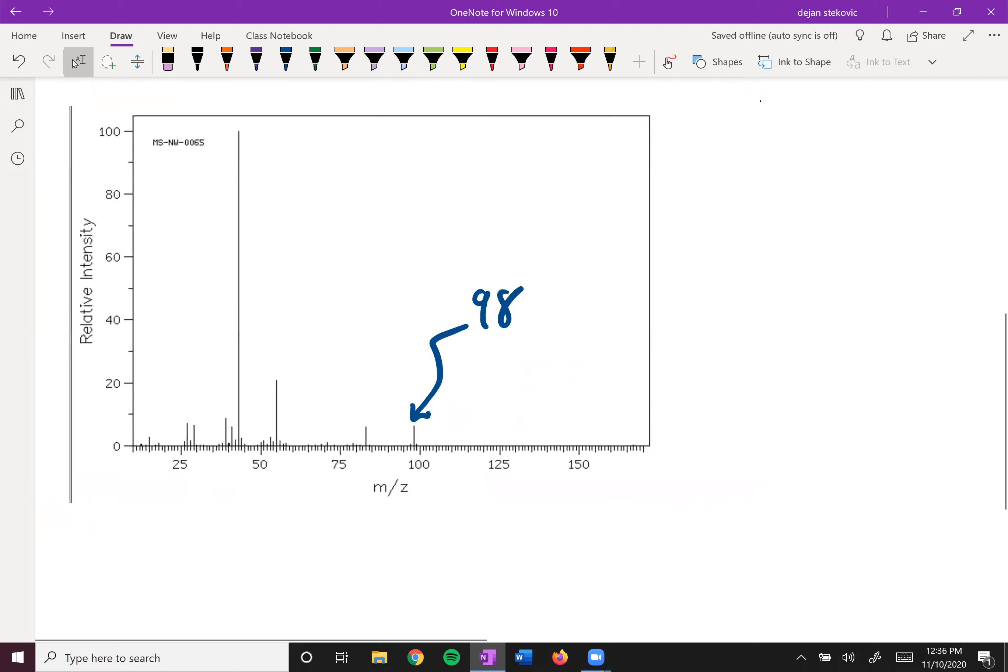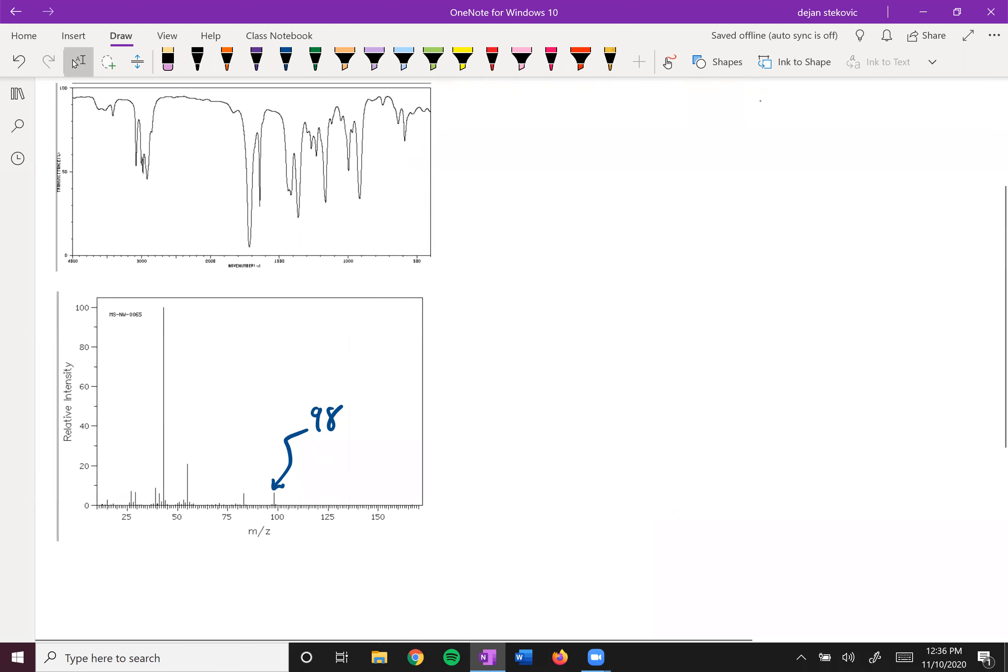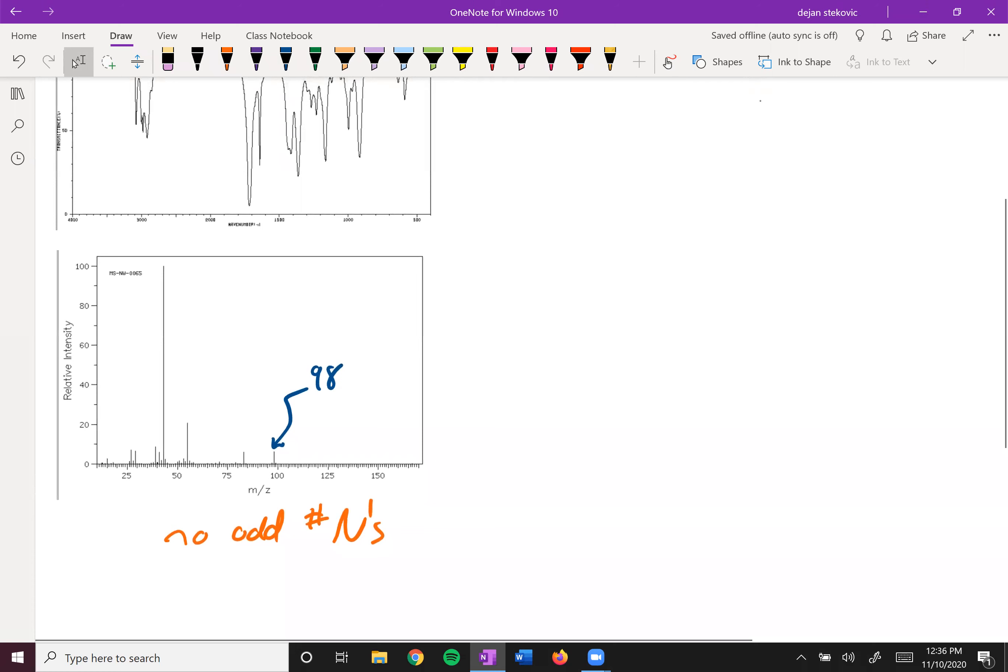Think about what that tells you. It's an even number, so no odd number of nitrogens. It does not have that three to one size peak for the chlorine with the M plus two peak, and it doesn't have two evenly sized peaks two mass units apart, so there's no bromine either. That's the information we can pull from there.